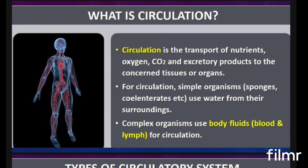Simply, circulation means the transport of nutrients, oxygen, carbon dioxide, and excretory products — their elimination and transport. This transportation mechanism is called circulation. In plants we call it transportation; in human beings and animals, this transportation is carried out by the blood, so that's why it is known as circulation.